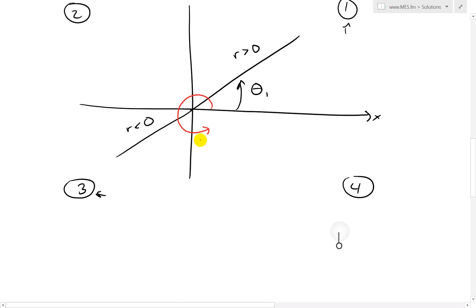draw it here, theta 2. So then we have a line like this, and then let's say we have r is greater than 0 in this case,